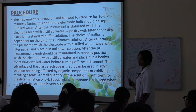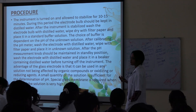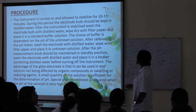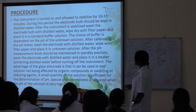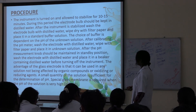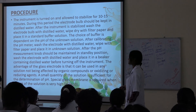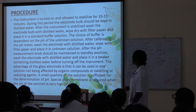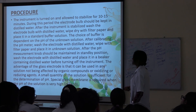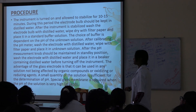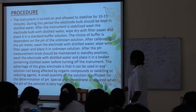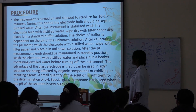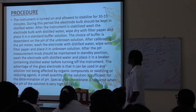Now for the procedure: the instrument is turned on and allowed to stabilize for 10 to 15 minutes. During this period, the electrode bulb should be kept in distilled water. After stabilization, wash the electrode bulb with distilled water, wipe dry with filter paper, and place it in a standard buffer solution. The choice of buffer depends on the pH of the unknown solution. After calibrating the pH meter, wash the electrode with distilled water, wipe with filter paper, and place it in the unknown solution. After pH measurement, the meter should be maintained in standby position. Wash the electrode with distilled water and place it in a beaker containing distilled water before turning off the instrument.